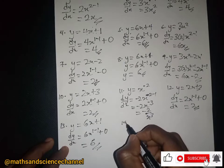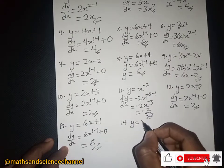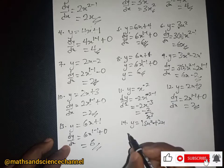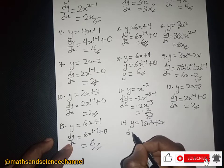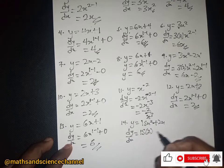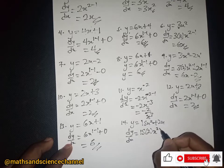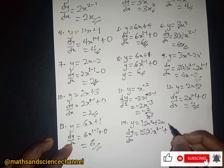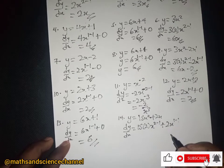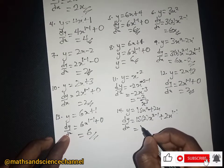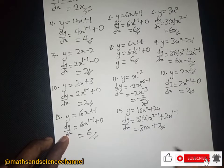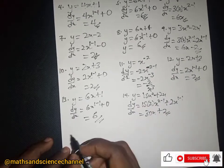Another one: y equal to 15x squared plus 2x. The dy/dx will be equal to — 15 multiplied by 2 then x to the power 2 minus 1, and over here we have 2 then subtract 1 from the exponent — so we are just going to get 30x plus 2.